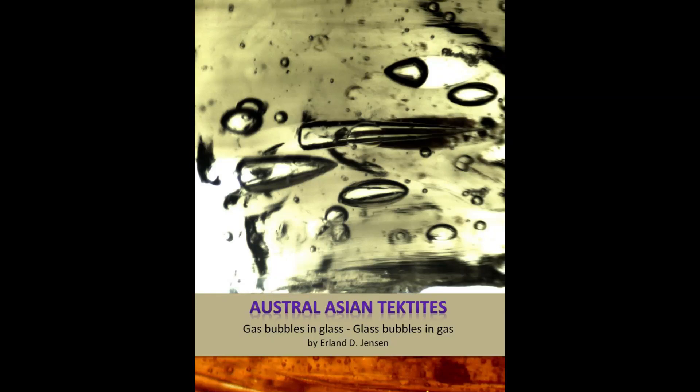This video poster presents a book about Australasian tektites. It contains 42 chapters, as well as a dictionary and a reference list. After watching each video poster, you can download relevant chapters for detailed readings using the link in the description below.